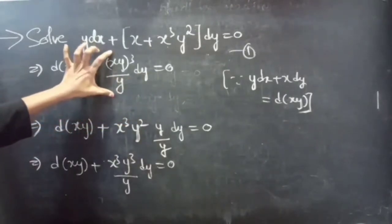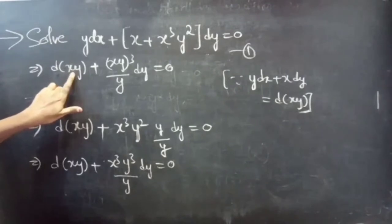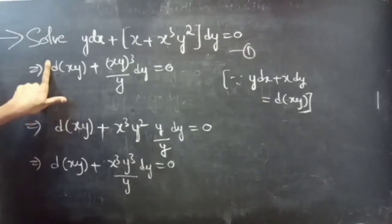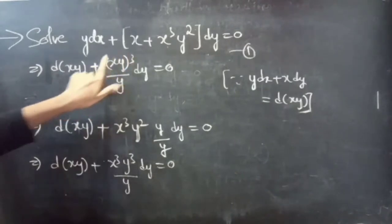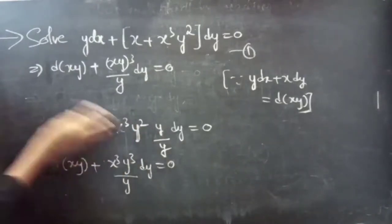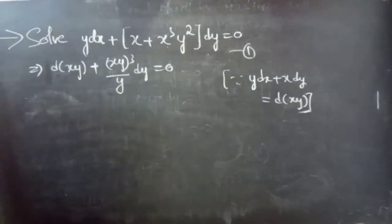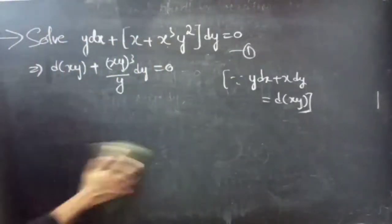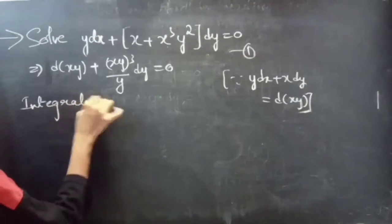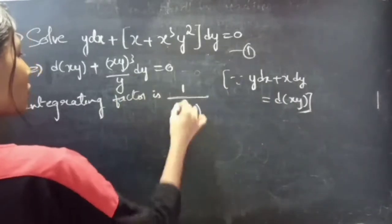Since we have a differential d(xy), it will be easy to integrate if we have only functions of xy. We need all functions of xy in the first term. So we will eliminate (xy)³ from the second term by dividing the whole equation by (xy)³. Therefore, the suitable integrating factor is 1/(xy)³.